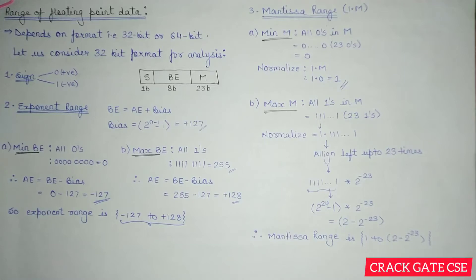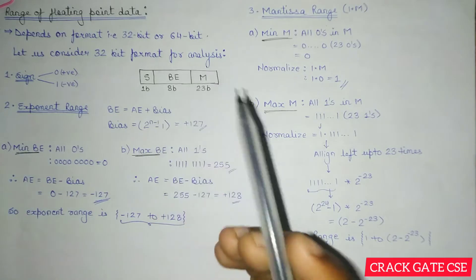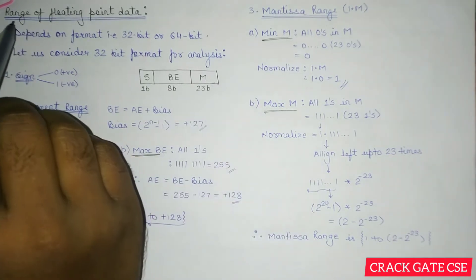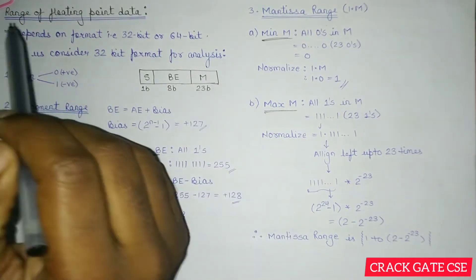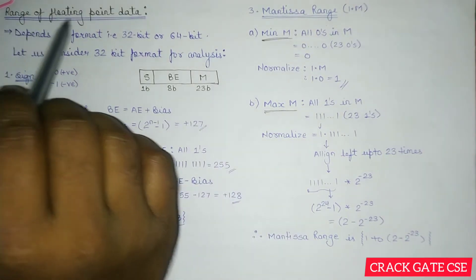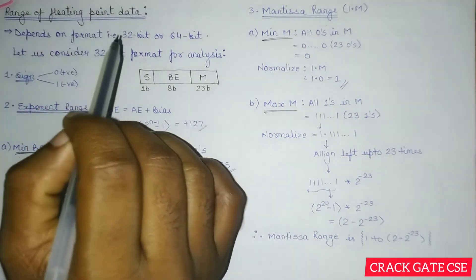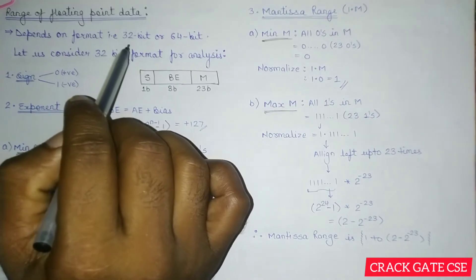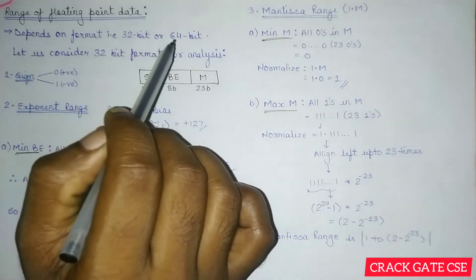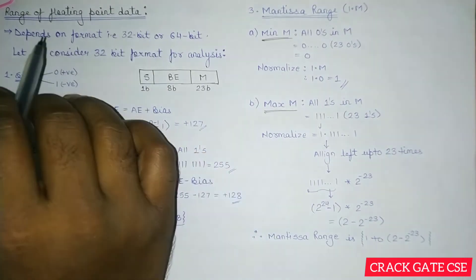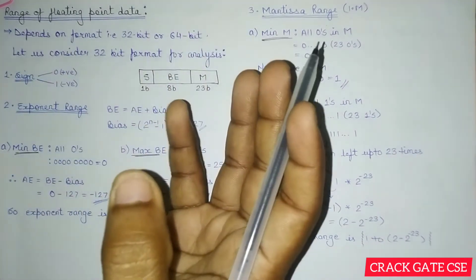Hello friends, welcome to Crackgate CSE. In this playlist of computer organization, today we'll be understanding how you can find out the range of floating point data, whether it is a 32-bit format, 64-bit format, or any hypothetical format.